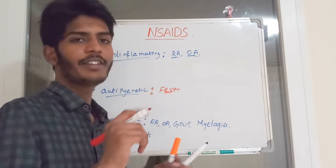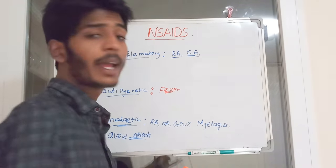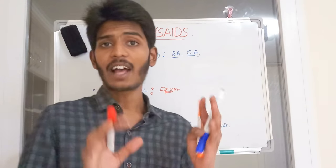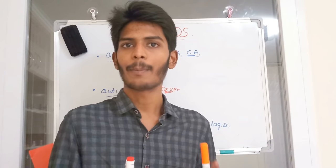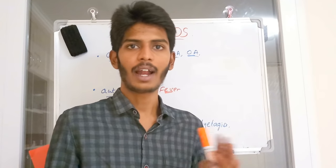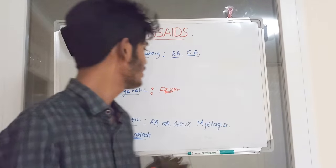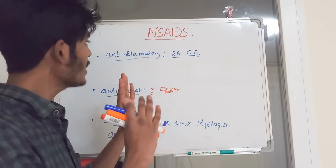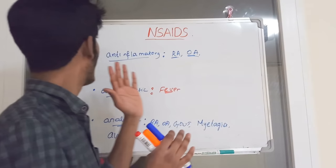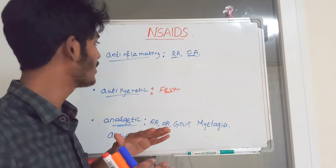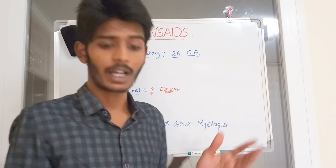The antipyretic property makes NSAIDs useful for fever. However, an important note: aspirin should not be used for fever in children below 12–15 years of age, as it can cause damage to the liver and kidney — a serious concern in pediatric patients.